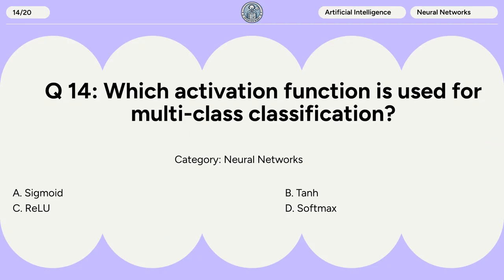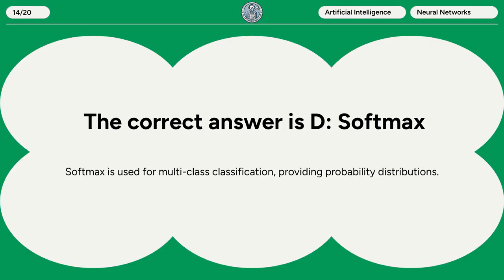Question 14. Which activation function is used for multi-class classification? A. Sigmoid. B. Tanh. C. ReLU. D. Softmax. The correct answer is D: Softmax. Softmax is used for multi-class classification, providing probability distributions.